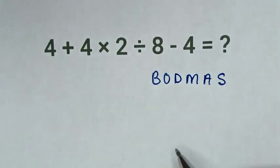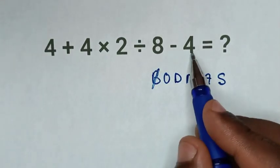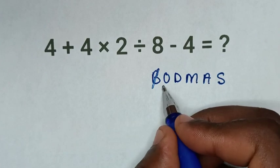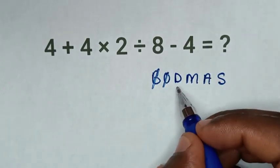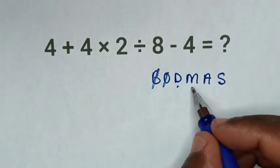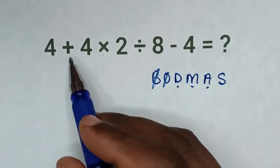BODMAS: B is bracket - we don't have bracket in this problem. Also, we don't have orders or exponents in this problem. But we have division which is this, multiplication is this one, addition is this, and subtraction which is this.